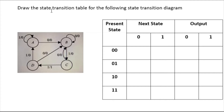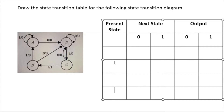This is an example: draw the transition table for the following state diagram. The present states are a, b, c, d. I will put a, b, c, d here as the present states.